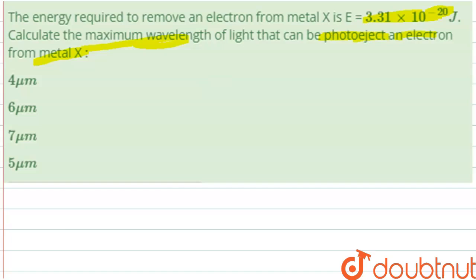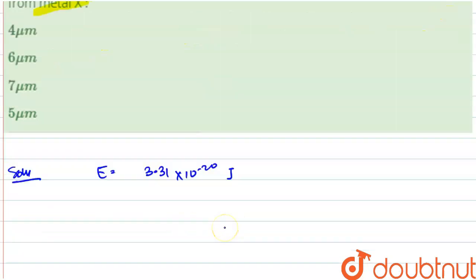So, in this question, we have energy equals 3.31 into 10 to the power minus 20 Joule. And energy is equal to hc by lambda. From this equation, we can find the value of lambda.